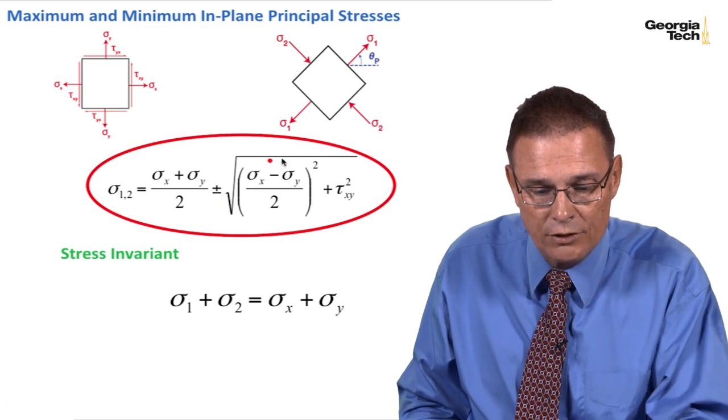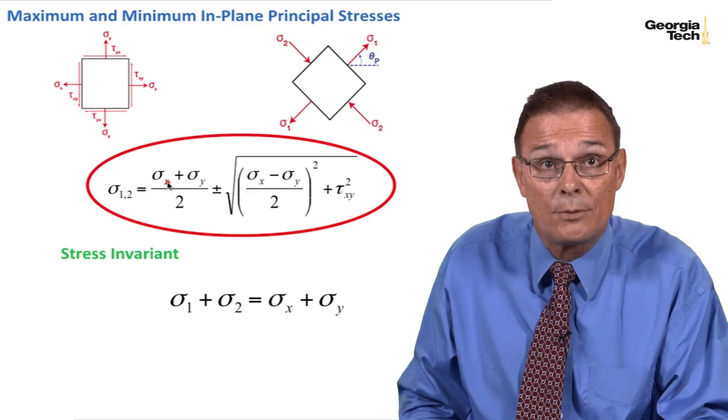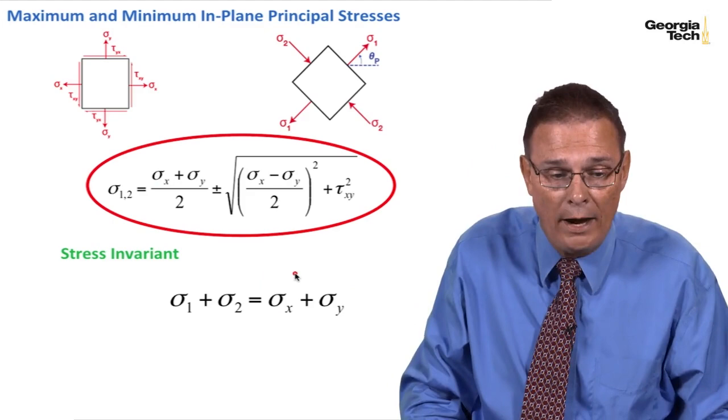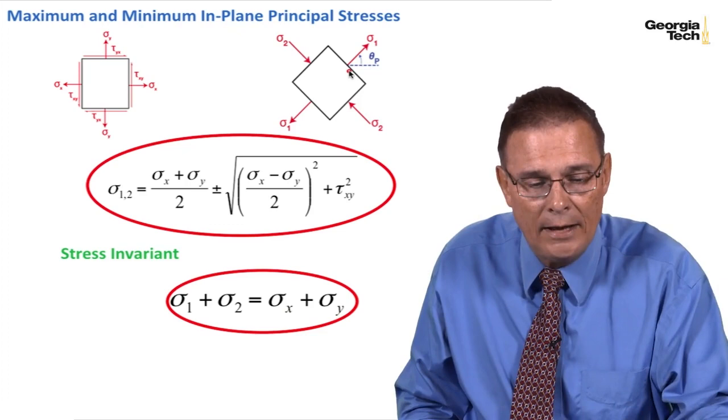On the right hand side, this plus and minus will cancel out this part. And so I'll have sigma sub x plus sigma sub y over 2 plus sigma sub x plus sigma sub y over 2 or sigma sub x plus sigma sub y. That's a very important result. It's the stress invariant.